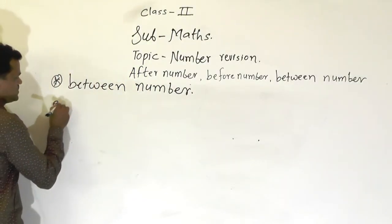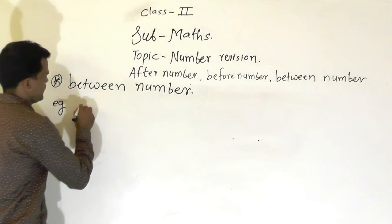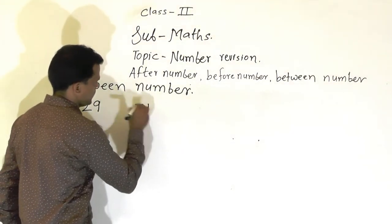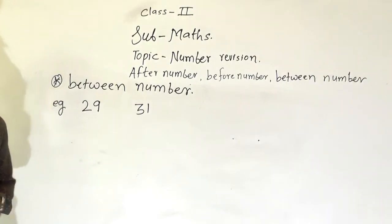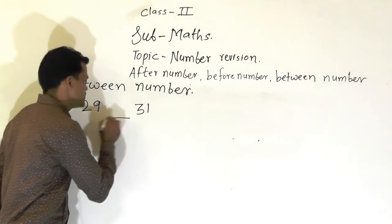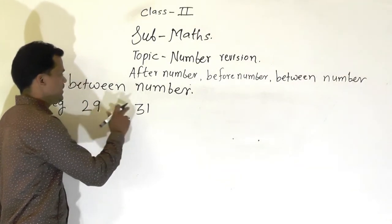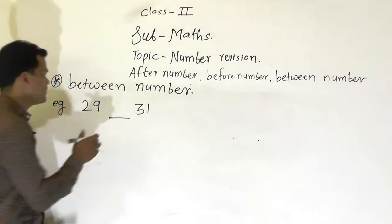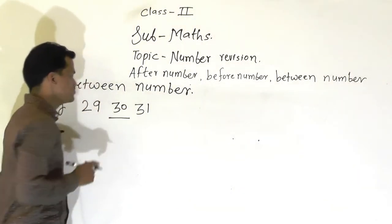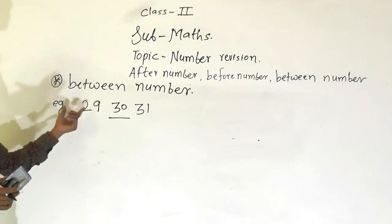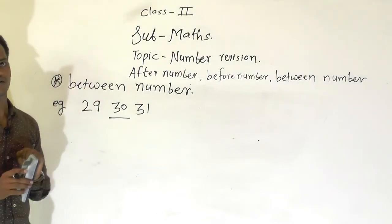So first example here. 29 and 31 — these two numbers are given, and we have to find the between number, meaning which number comes in between 29 and 31. That number is 30. So 30 is the between number of 29 and 31.